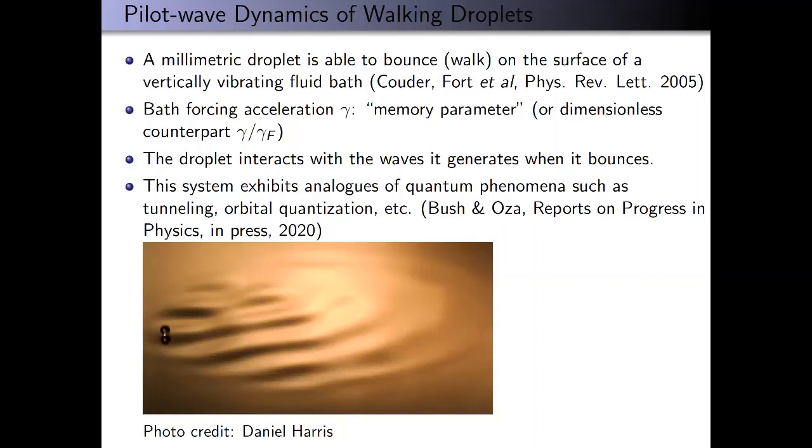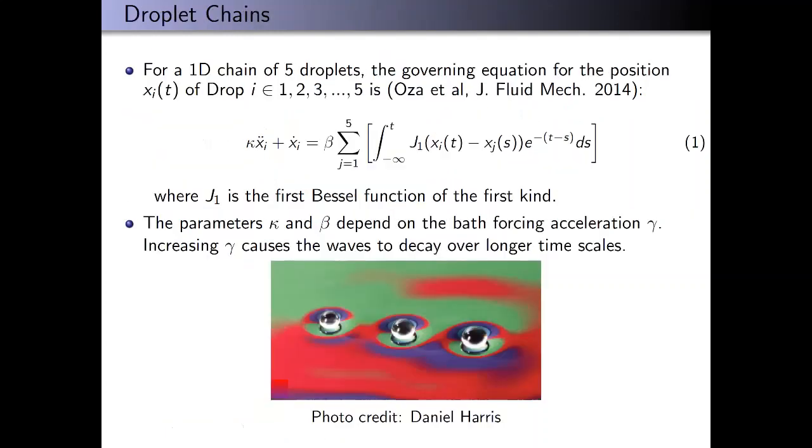This system is interesting because it's a macroscopic system that exhibits analogues of quantum phenomena. Now we're going to consider a one-dimensional chain of five droplets positioned along the x-axis.